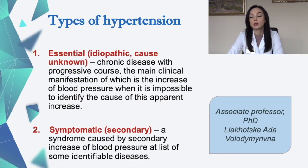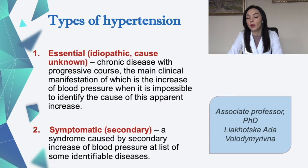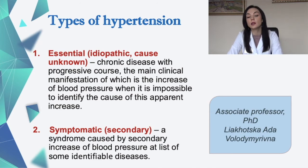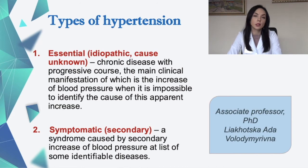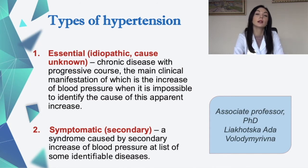The types of hypertension are essential and symptomatic. Essential hypertension has an unknown cause — it is a chronic disease with progressive course, the main clinical manifestation of which is increased blood pressure when it is impossible to identify the cause of the apparent increase. Symptomatic hypertension is secondary, also called a syndrome caused by a secondary increase of blood pressure which stems from some identifiable disease.